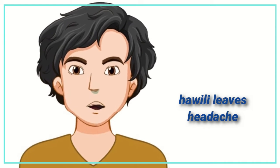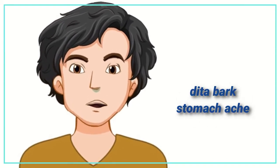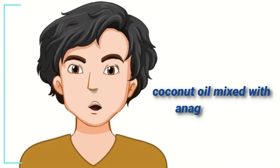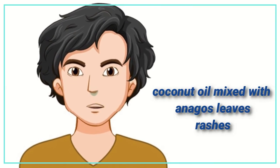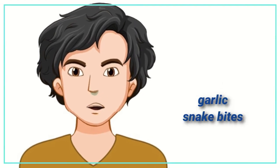Dried and powderized dita bark is used to treat stomach ache. Coconut oil mixed with anago's leaves is used to treat rashes, and garlic is applied to snake bites.